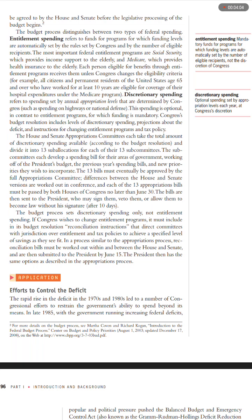The sub-committees each develop a spending bill for their areas of government, working off of the President's budget, the previous year's spending bills, and new priorities they wish to incorporate. The 13 bills must eventually be approved by the full appropriations committee. Differences between the House and Senate versions are worked out in conference, and each of the 13 appropriations bills must be passed by both houses of Congress no later than June 30. The bills are then sent to the President, who may sign them, veto them, or allow them to become law without his signature after 10 days.